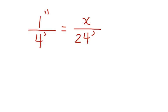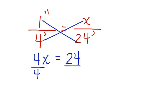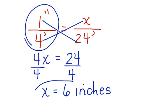We can cross-multiply and solve. 4 times x is 4x equals 1 times 24, which is 24. Now we have a one-step equation that we can solve. We divide both sides by 4, and x is equal to 6. 6 what? 6 inches. If Darcy uses this scale right here, then her model will be 6 inches tall.